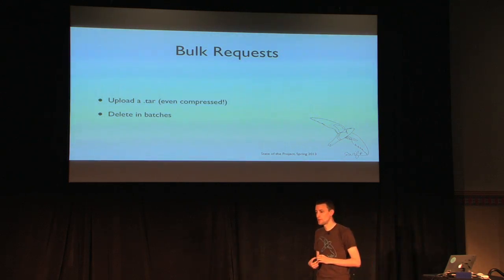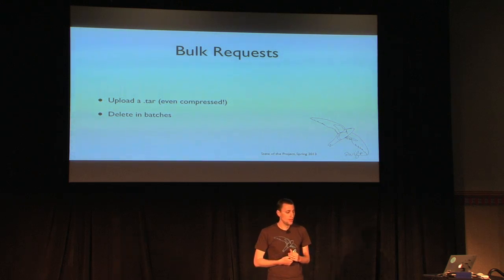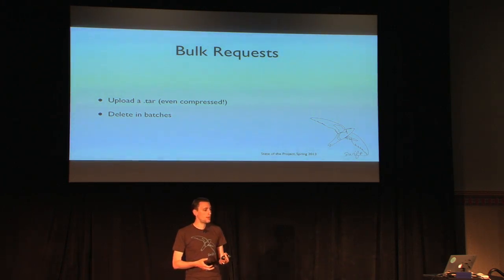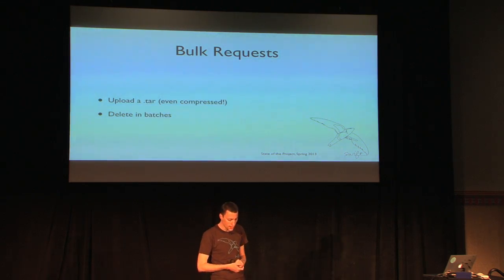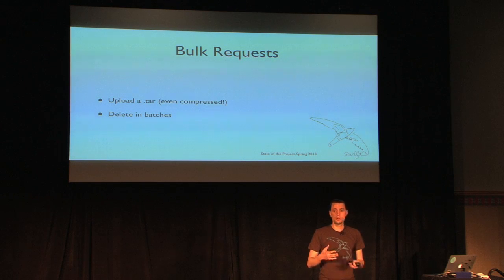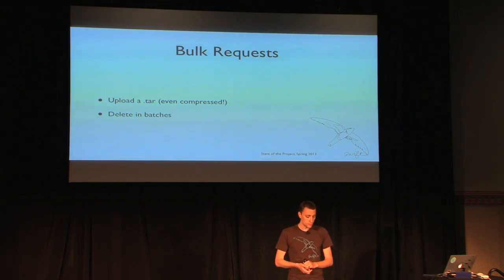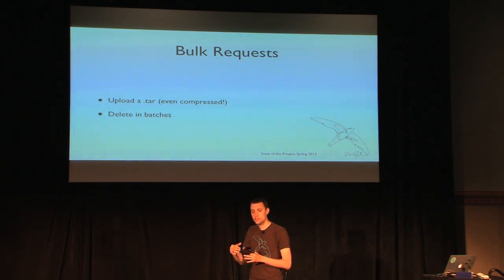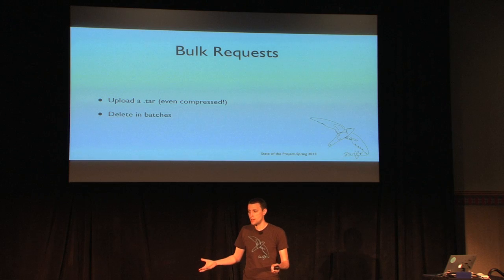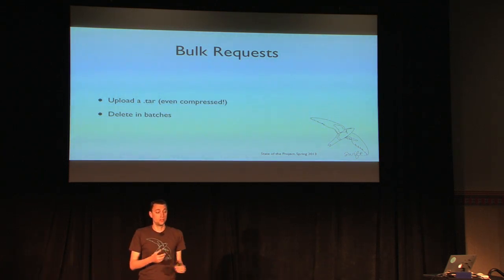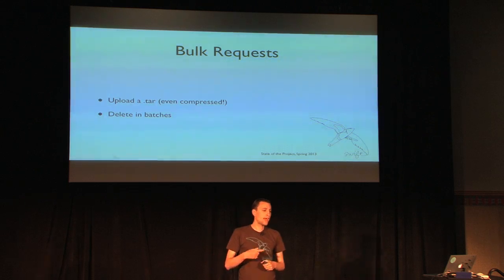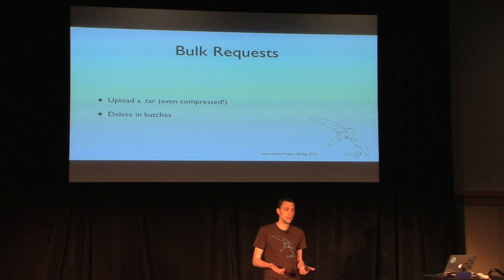Another common request is the ability to do more than one thing at once with the Swift endpoint, so we've added bulk requests. You can do bulk requests on creating or deleting objects. For creation, you upload a tar file — optionally compressed — and when it reaches the Swift cluster it is expanded into its constituent parts. You can even stream that tar into Swift and then access all items in that archive as individual objects directly after the fact.